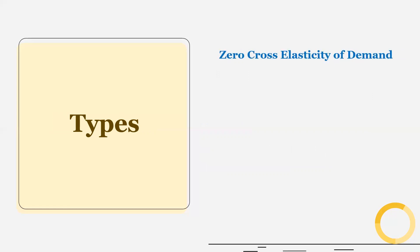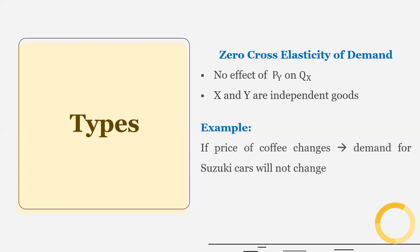And if there is no relation between price of Y and quantity of X, then we can say X and Y are independent goods. So price of coffee does not affect the demand for Suzuki cars. And therefore these two are independent commodities or independent goods.